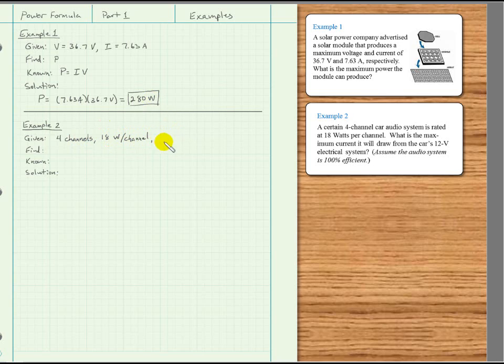The voltage is given as 12 volts. It's an automobile system, and most of them are at 12 volts still. What are we asked to find? The maximum current. So we're looking for current I.